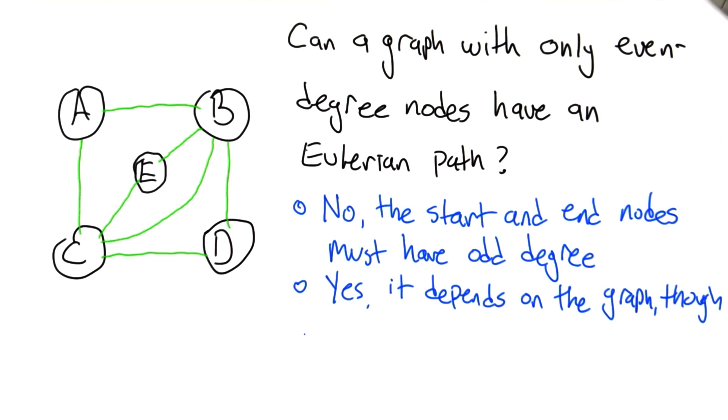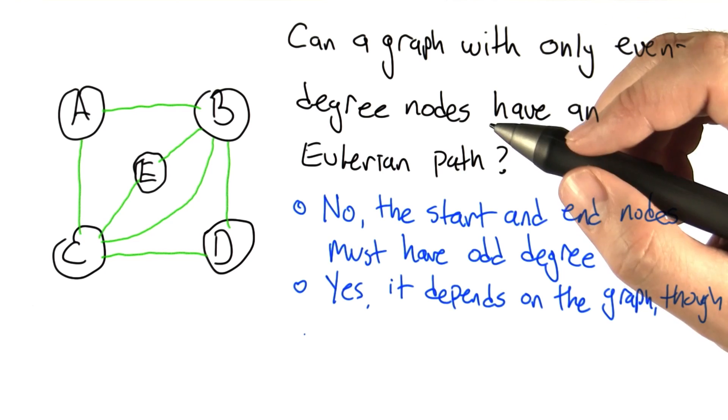Another possible answer is yes, but it depends on the particulars of the graph in question. So some graphs with only even degree nodes have Eulerian paths and some don't.